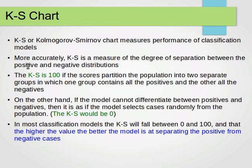For example, we have a model for applications — maybe a university place or anything — and we want to see good and bad applications: positive and negative applications. The ones we target are the positive ones; the ones we don't target are the negative ones. The KS actually has a value.